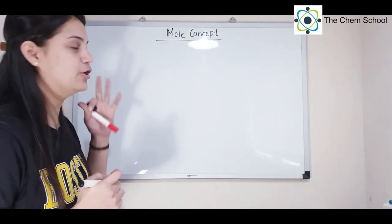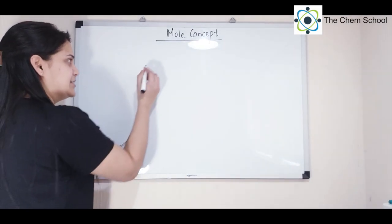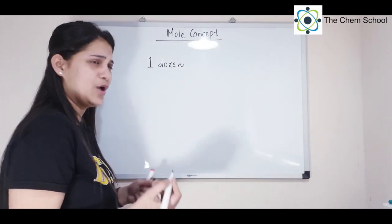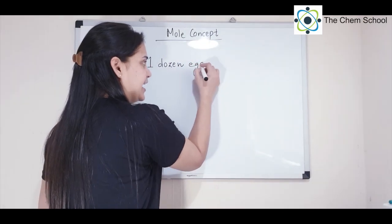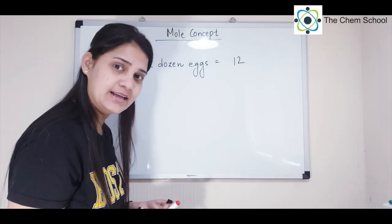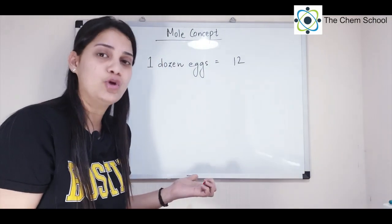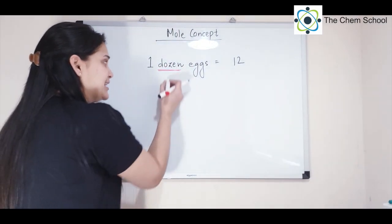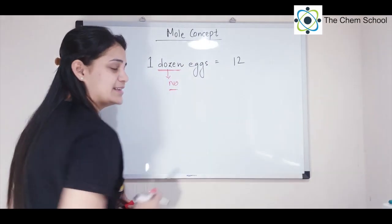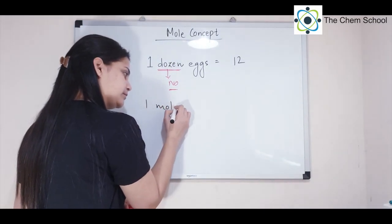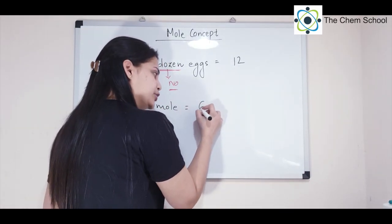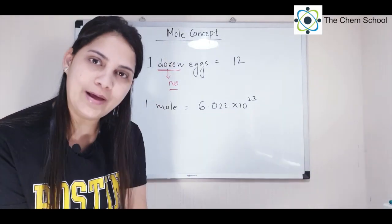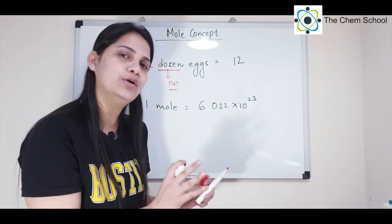First, let's understand what is the meaning of Mole. If I say 'one dozen,' the number 12 comes to your mind — one dozen eggs means 12 eggs, one dozen pens means 12 pens. So dozen is just a number. Similarly, the time I say 'one mole,' the number 6.022 × 10²³ should come to your mind. Treat it as a number, just like dozen equals 12, one mole equals 6.022 × 10²³.